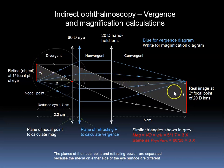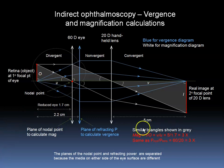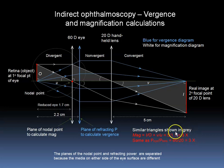In order to calculate the magnification, we use the nodal point and similar triangles as shown. The first similar triangle is similar to the second one, which is in turn similar to the third one; therefore, the first is similar to the third. The image height I divided by the object height O is equal to the distance V of the image from the handheld lens divided by the distance U of the retina from the nodal point. The magnification equals V over U, which is 5 cm divided by 1.7 cm, equal to 3 times magnification — this is 3 times linear magnification.